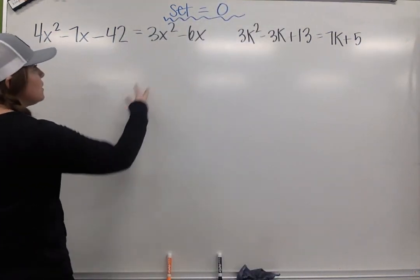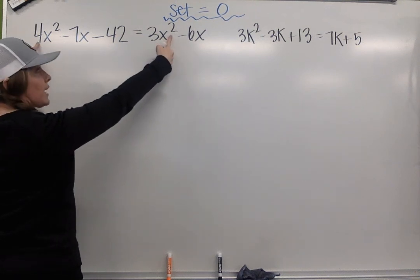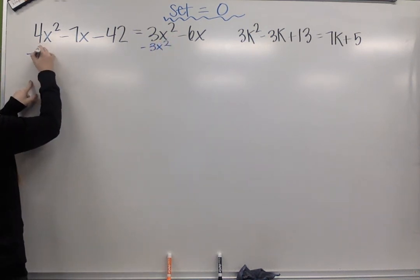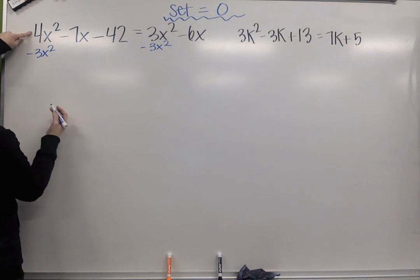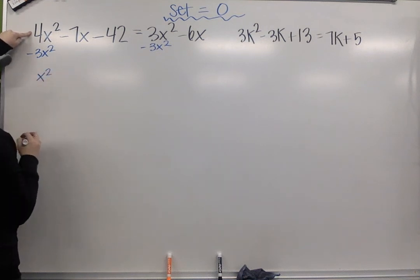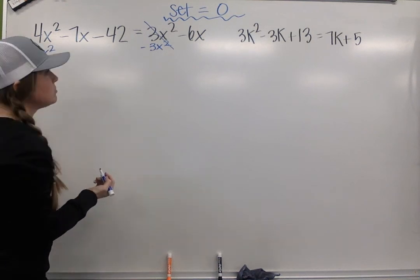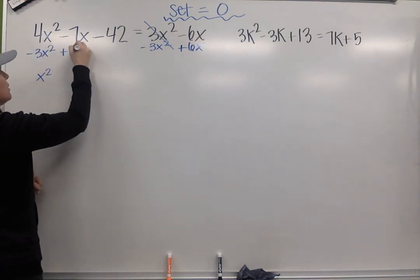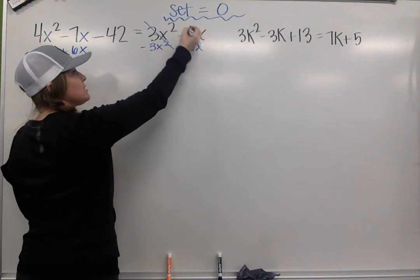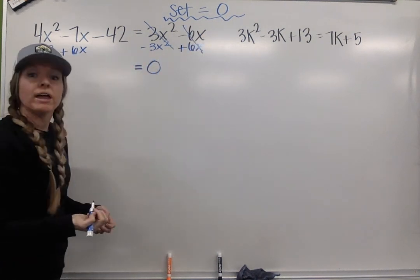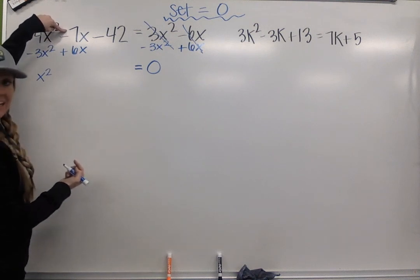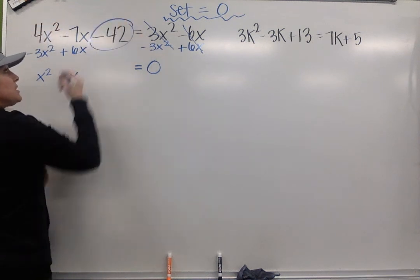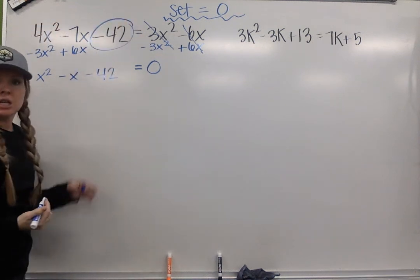Here I have a 3x² and a 4x². So I'm going to subtract 3x² from each side. That's going to give me 1x² here and 0 here. I also have a -6x, so I'm going to add 6x to each side. -6x plus 6x leaves me with 0. That's what I want. And here I have -7x plus 6x, which is -x. Nothing happened to the -42, so it stays as is.